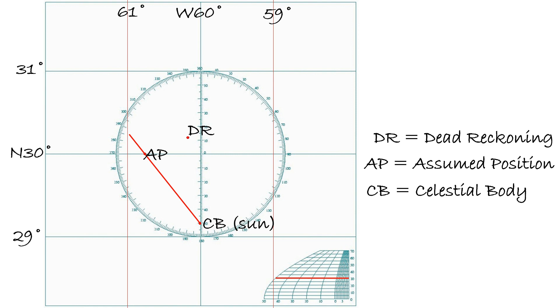Remember, one arcminute equals one nautical mile, and we use the scale in the center of our position plotting sheet to measure this distance.